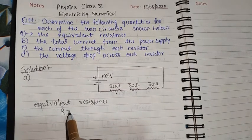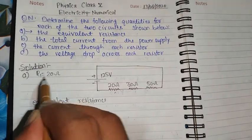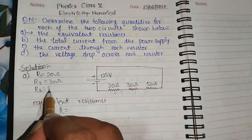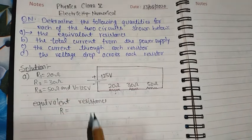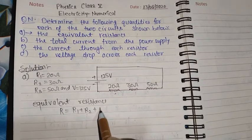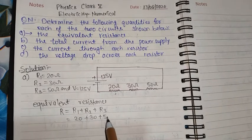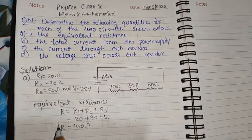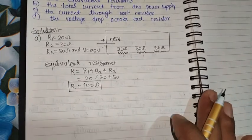Given: R1 = 20 ohm, R2 = 30 ohm, R3 = 50 ohm, and V = 125 volt. So the equivalent resistance R = R1 + R2 + R3 = 20 + 30 + 50 = 100 ohm. This is the answer to question number one.